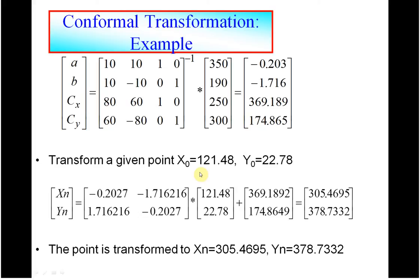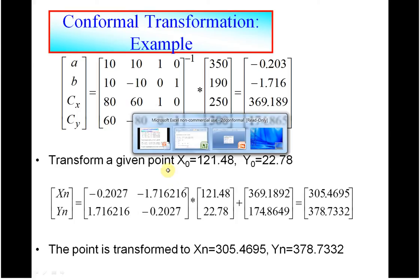And then, if we want to say, okay, if we have the old values of 121 or the original, which we want to look at 121.48 and 22.78, what are the corresponding y values there? We form the matrix by, there are the original points here, plus the translation, and we work it out to be 305.46 and 378.7332. Okay, how did I do that in Excel?